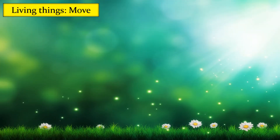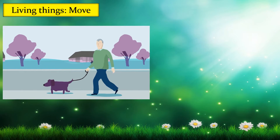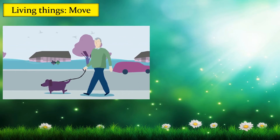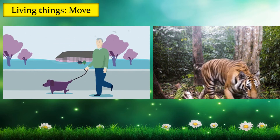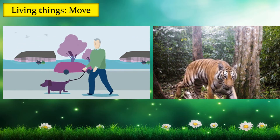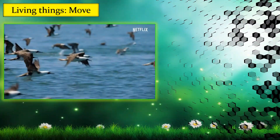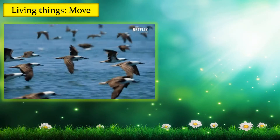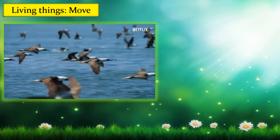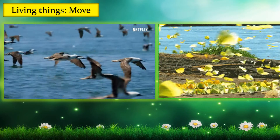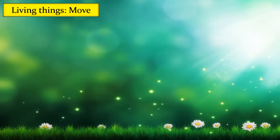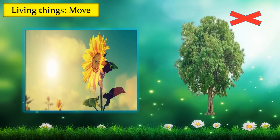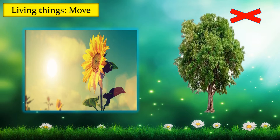All living things can move. For example, human beings have legs and can move from one place to another. Animals have legs and they can also move from one place to another. Birds have wings and they can fly and move. Butterflies also have wings to move from one place to another. Trees are living things which cannot move, but the sunflower moves in the direction of the sun and faces it.